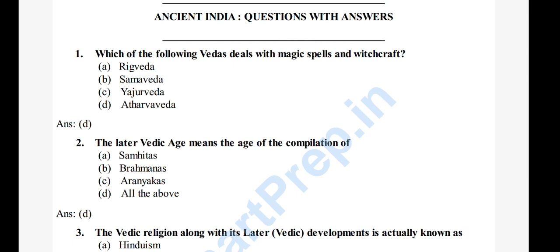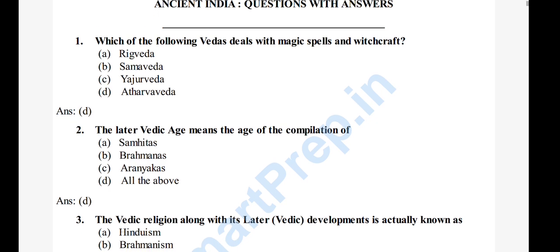I am going to do a speed revision. Question 2: The Latter Vedic Age means the age of compilation of — A) Samhitas, B) Brahmanas, C) Aranyakas, D) All of the above. The right answer is option D: Samhitas, Brahmanas, and Aranyakas. The Latter Vedic Age compiled all of these.